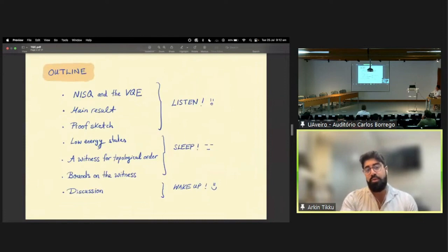So first, let me give you a brief outline of this talk. First, I'll be giving you a brief review of quantum computing in the near term and the variational quantum eigensolver. Then I'll state our main results and give you a brief outline of our proof.